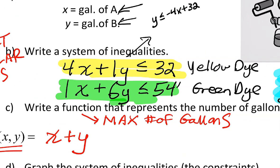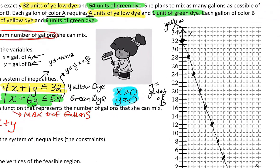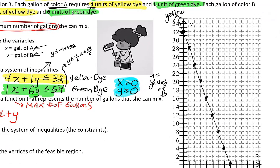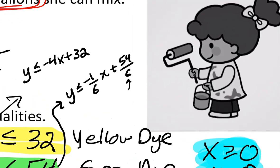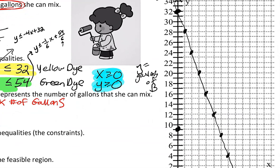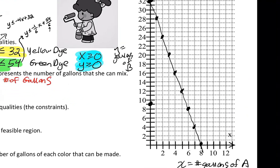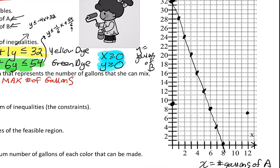The second equation in slope-intercept form: subtract 1X from both sides and divide by 6, giving Y ≤ -1/6 X + 9. So we have a Y-intercept of 9 and we go down 1 over 6. We just need to know where those two lines intersect. This line represents our green dye constraint.